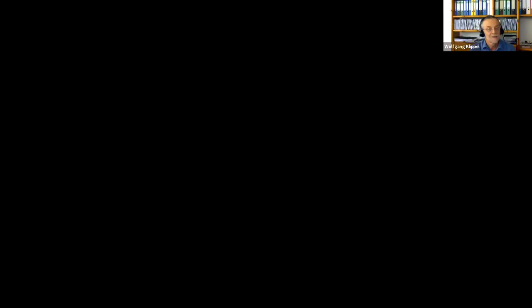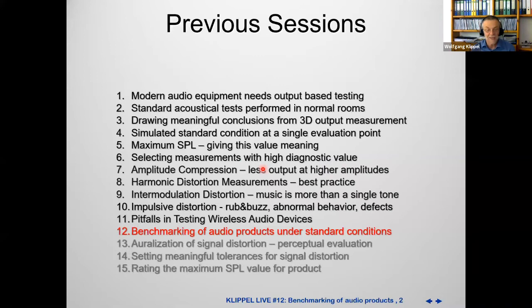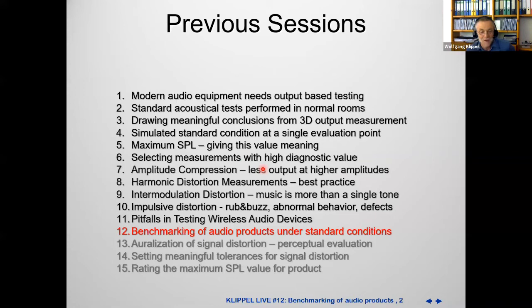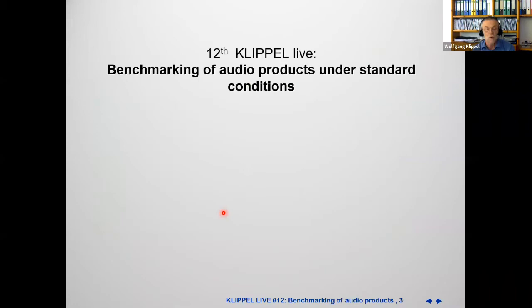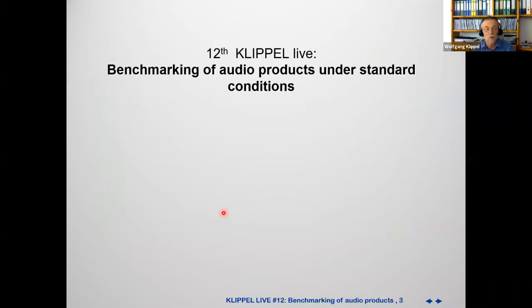We had already 11 sections. We started with a new idea of doing output-based measurements and then spent a lot of time with acoustical measurements in a normal room. We discussed in greater detail all kinds of distortion measurement. The last one was about the pitfalls with wireless audio devices — varying latency and other problems. Now we are coming to a new section: the application of this new standard's ideas and possibilities in practice.